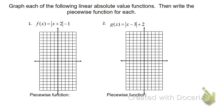Here we've got function number one: f of x equals the absolute value of x plus 2, minus 1. Let's start by finding that critical turning point. It should be x minus h, but it's not — this tells me it's really x minus negative 2. So the h value is negative 2, and k is negative 1. Our turning point is negative 2, negative 1. Now for the slope, there's no coefficient in front — I don't see an a value — so a is 1. On the right side we'll use a positive slope of 1, and to the left of negative 2, we'll use a negative 1 slope. So our slope is plus or minus 1.